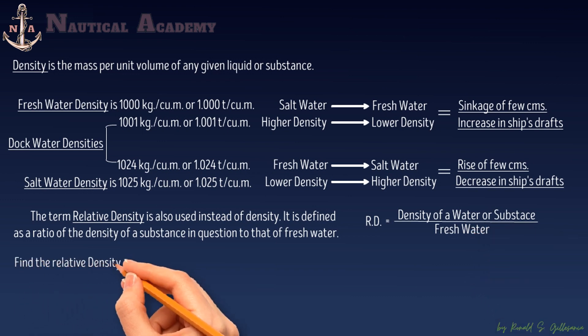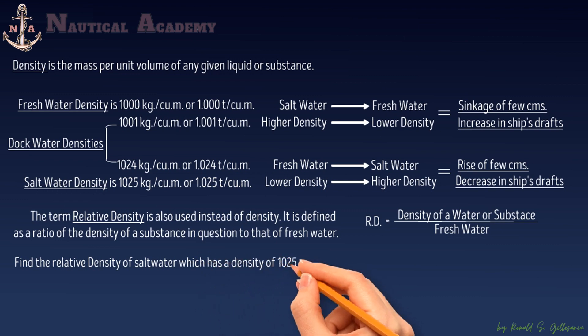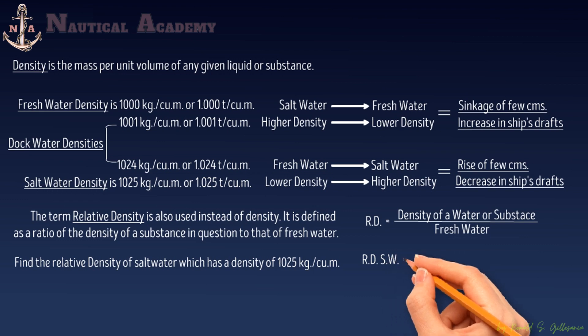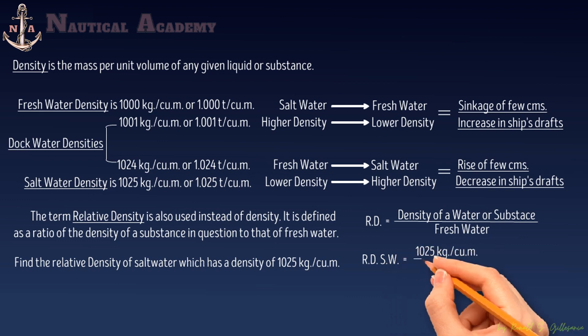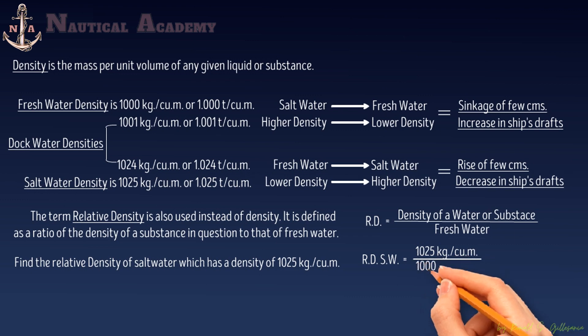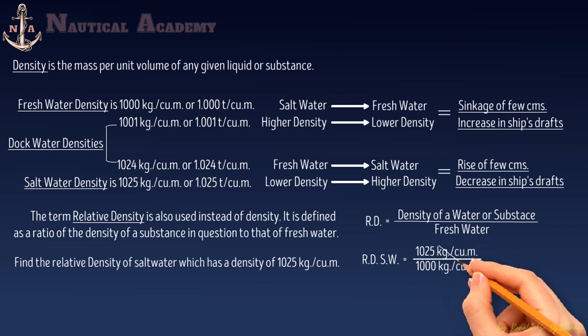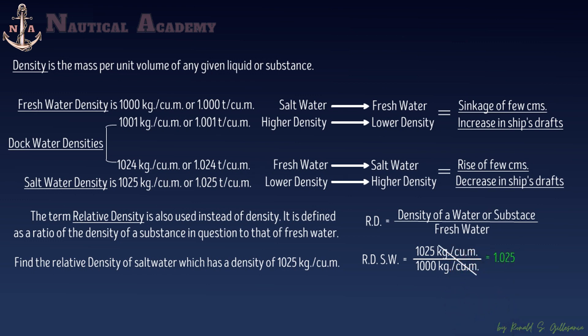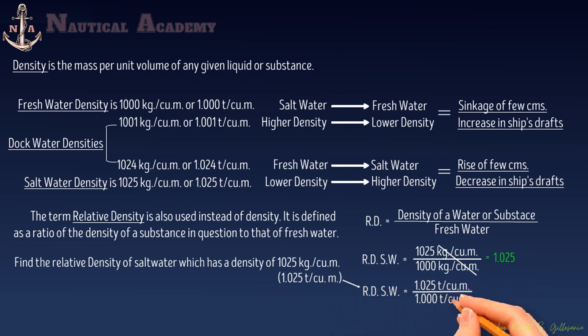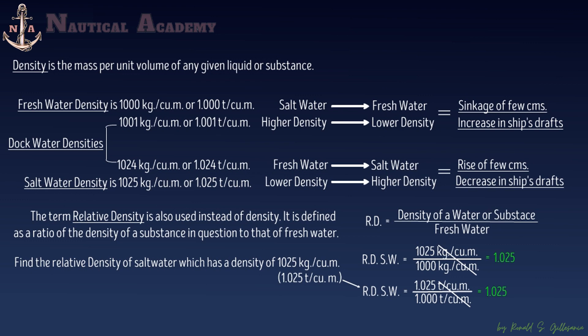Let us find the relative density of saltwater, which has a density of 1025 kilograms per cubic meter. The relative density of saltwater equals 1025 kilograms per cubic meter divided by 1000 kilograms per cubic meter. Canceling the units, the answer is 1.025. Similarly, if the given density is in tons per cubic meter, such as 1.025 tons per cubic meter, divide by the freshwater density in the same units and cancel both units — the answer is again 1.025. Relative density has no units.